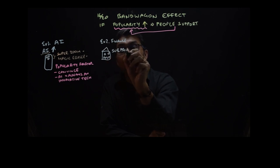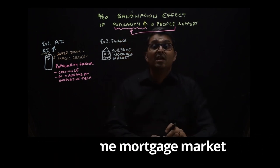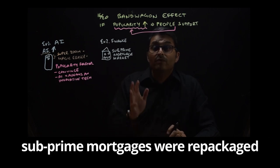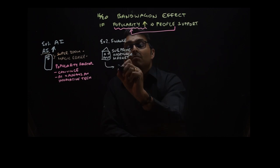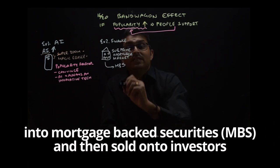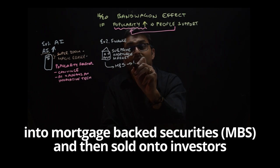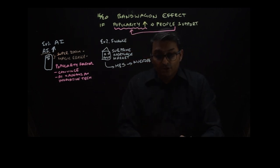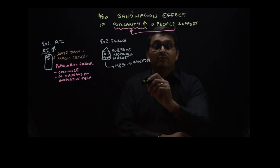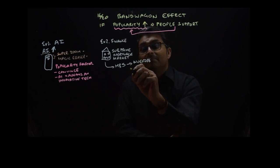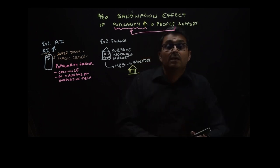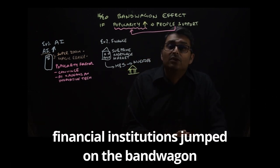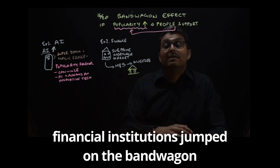The market was the subprime mortgage market. Subprime mortgages were repackaged as subprime mortgage-backed securities and then sold on to investors. Financial institutions in the form of lenders, investors, and buyers joined or jumped on the bandwagon, creating an unregulated and unstable housing bubble.